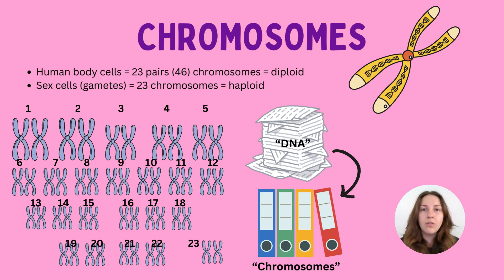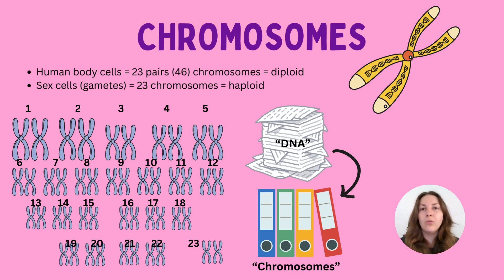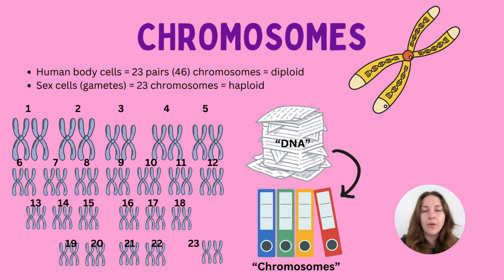I did do a whole video on this previously and I'll link it for you. We should know at GCSE that there are 23 pairs, or 46 chromosomes, in the human body. This is what makes the cells diploid — we're talking about body cells in humans, so for example our skin cells, our liver cells, our eye cells. There are 23 pairs of those chromosomes.